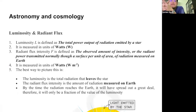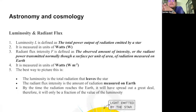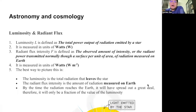What do we learn first about astronomy and cosmology? First, we learn about what is luminosity and radiant flux intensity. So what is luminosity? Luminosity is basically the total power output of radiation emitted by a star.